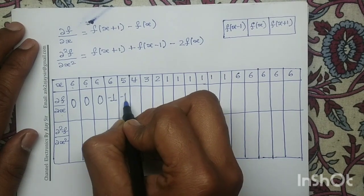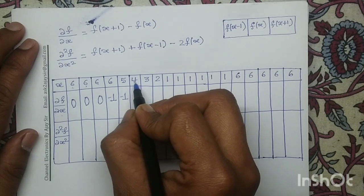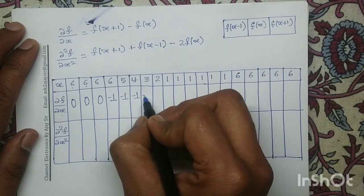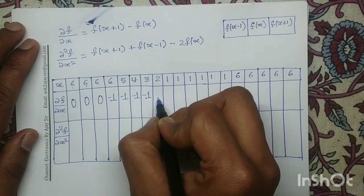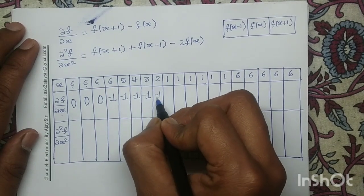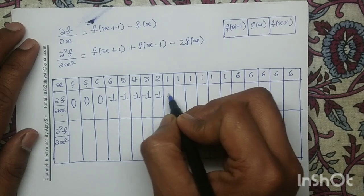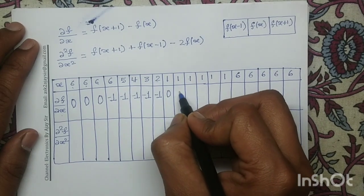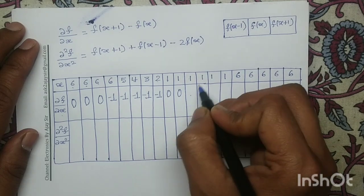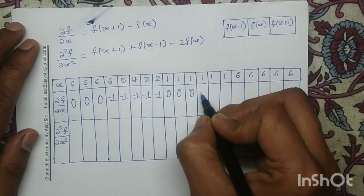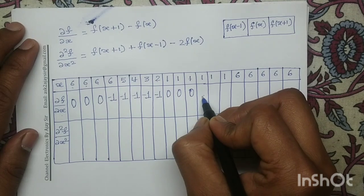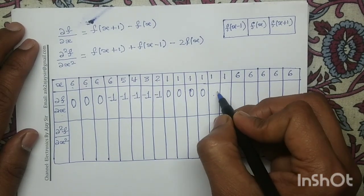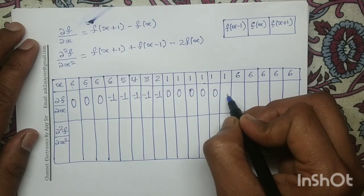Continuing: 4 minus 5 = −1; 3 minus 4 = −1; 2 minus 3 = −1; 1 minus 2 = −1. Similarly, 1 minus 1 = 0 at the next several positions, giving 0 repeatedly across those elements.